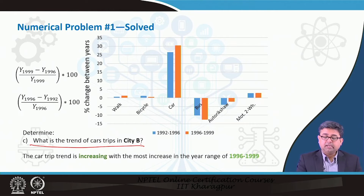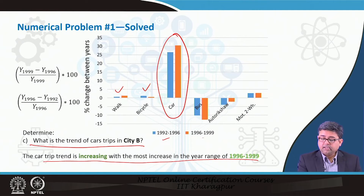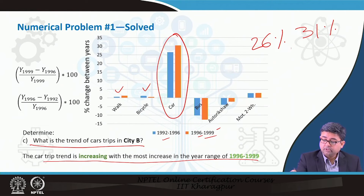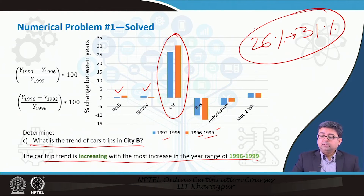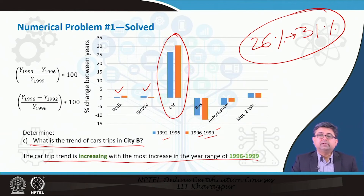The last question is the trend of car trips in City B. Car trips are also increasing between 1992 and 1999. From 1992 to 1996 there was an increase of about 31 percent in car trips. City B, which was already identified as less NMT-friendly, also reflects an increasing trend in car use — a motorized mode — confirming that City B is not friendly for non-motorized transport.